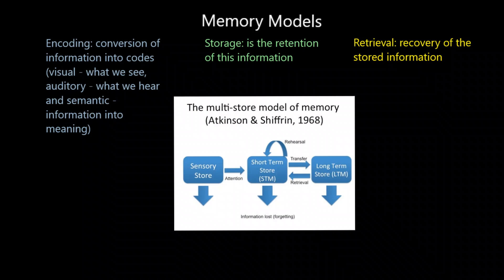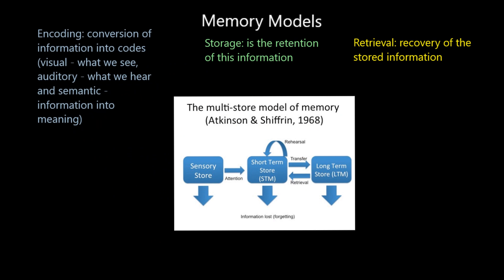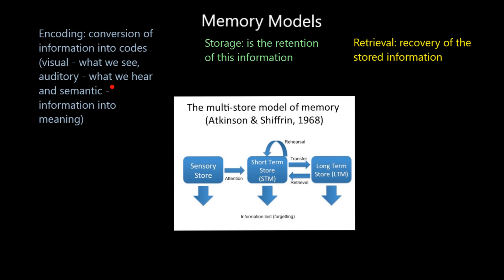Hi folks, welcome to this video on memory models. This video is going to look at the Atkinson and Shiffrin model of memory and the Craik and Lockhart model of memory, and we'll look at the differences between the two. First, a few quick definitions: encoding is the conversion of information into codes — visual is what we see, auditory is what we hear, and semantic is a term for changing information into meaning.